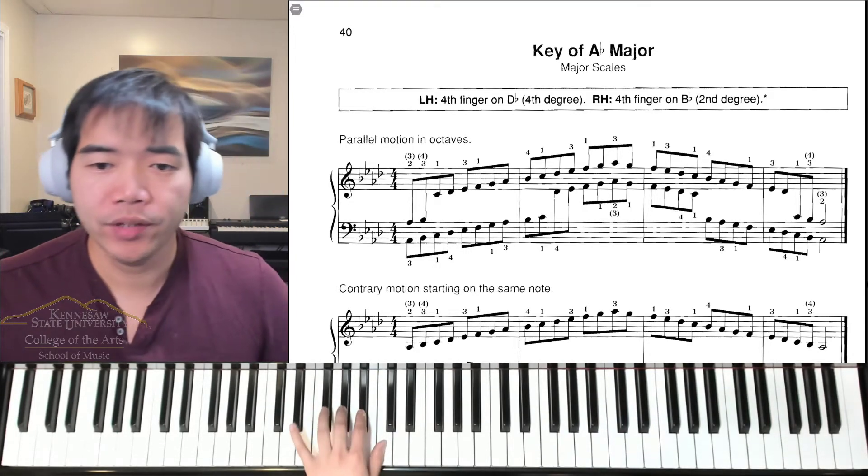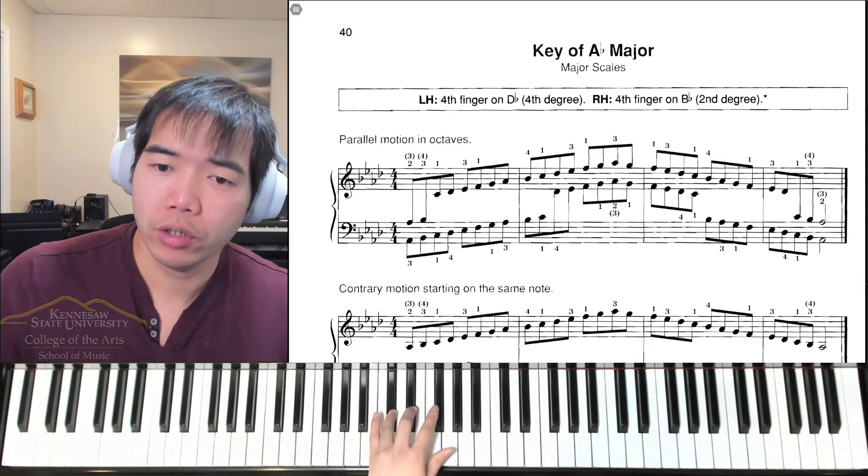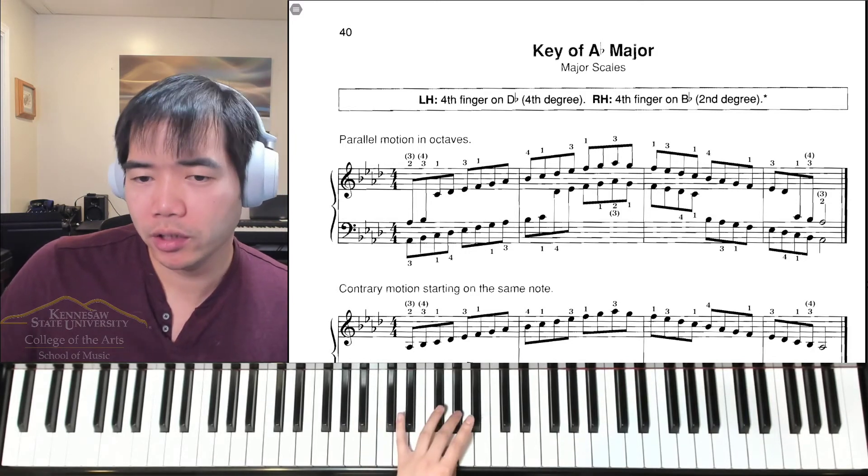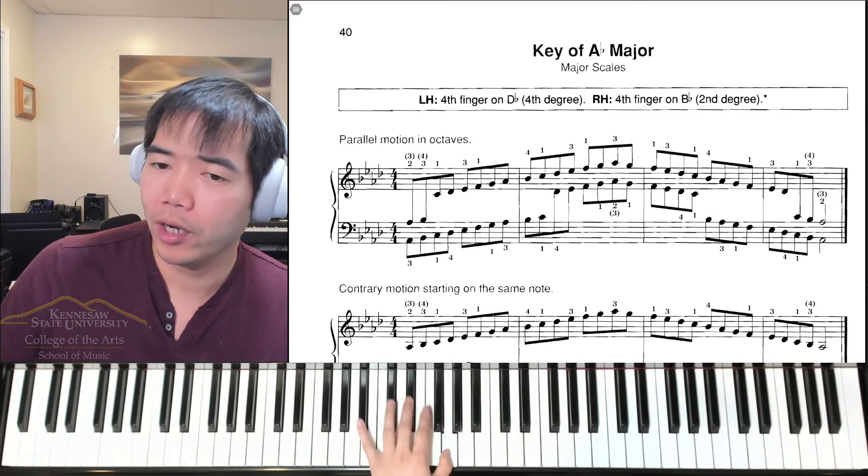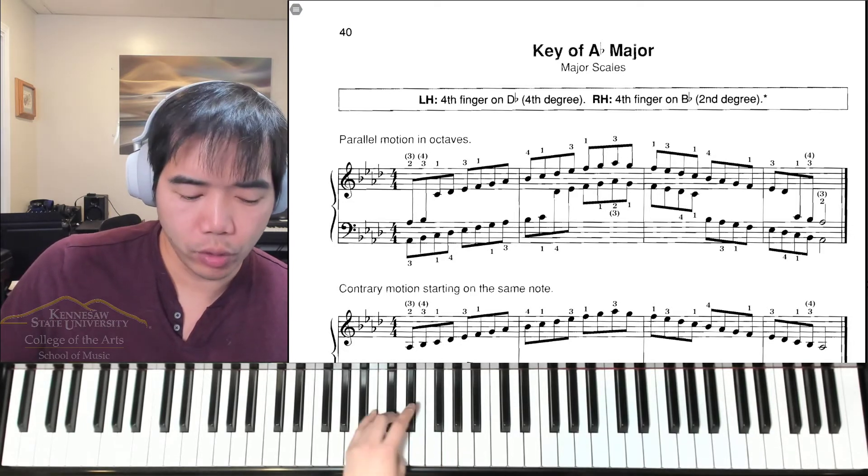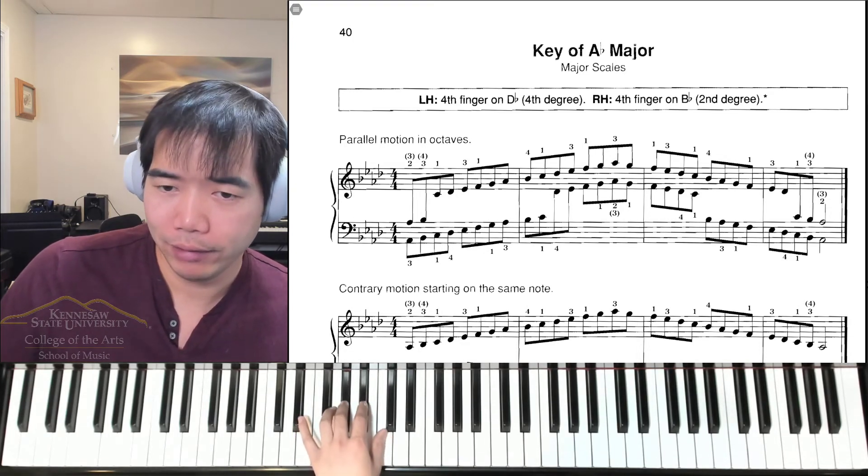Once again, three, two, one, shift to four, three, two, one, cross to three. Back down, one, two, three, fourth thumb on C, second on B flat, and third on A flat.